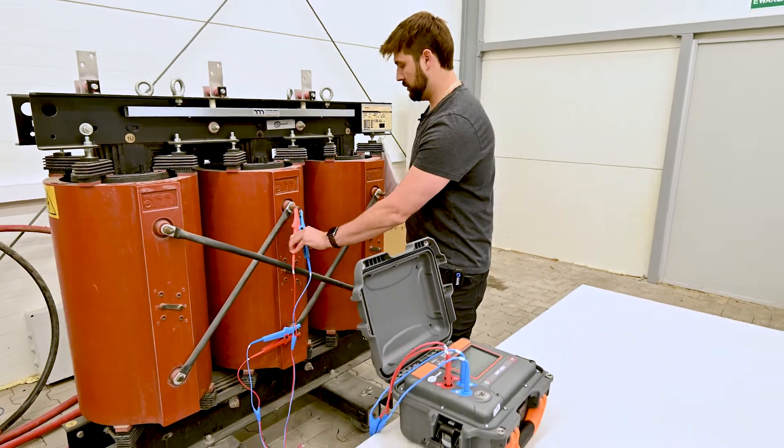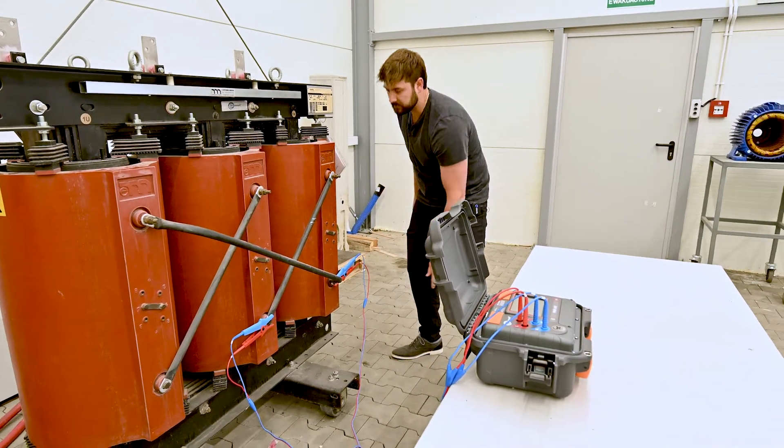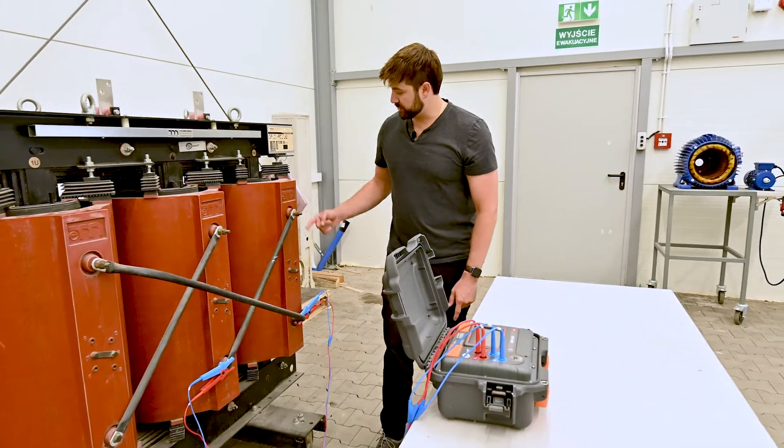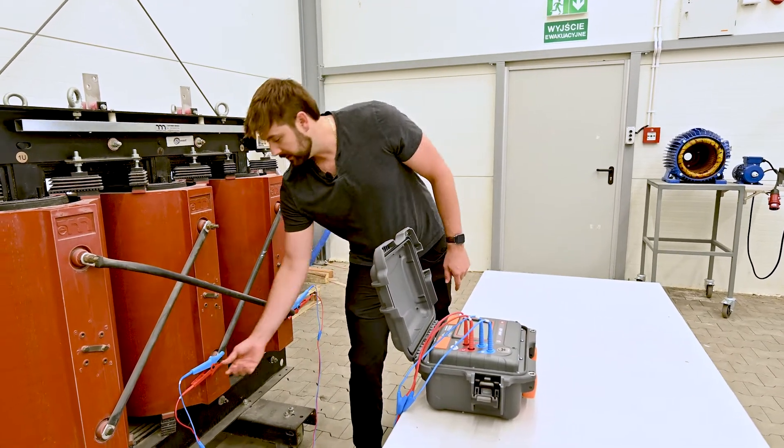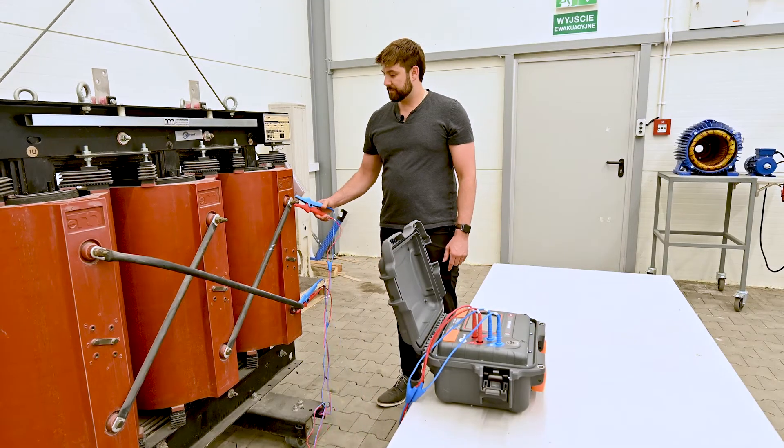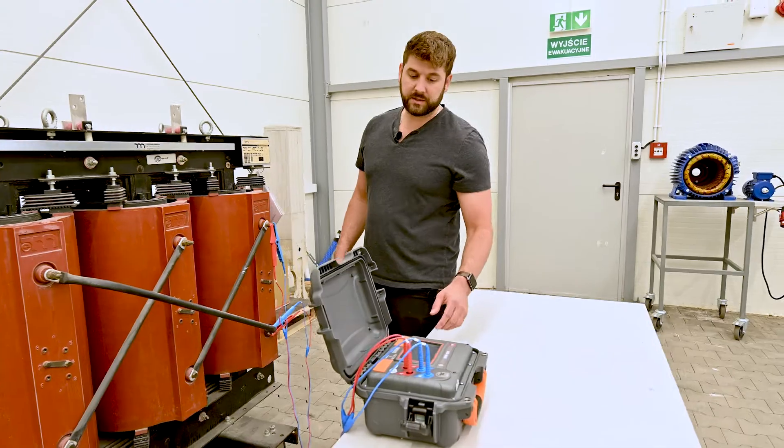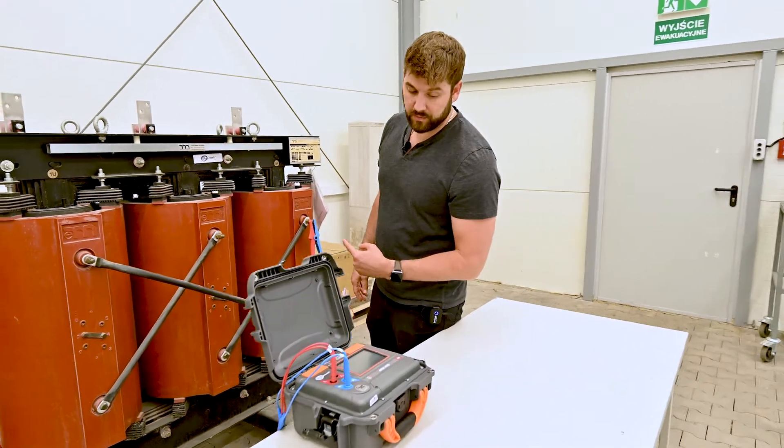Moving to the third phase, we can move this lead to here. Once again, I'm measuring across this winding. If I want to exclude this jumper, I can put my measurement lead here. Let's check the resistance of our third phase winding.